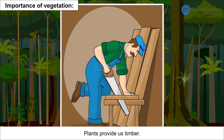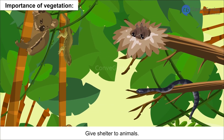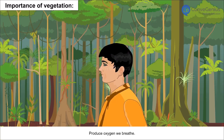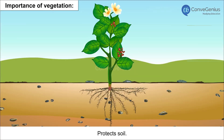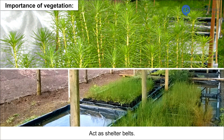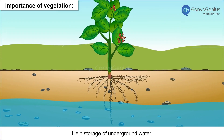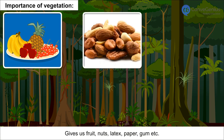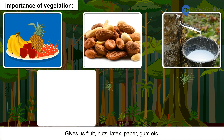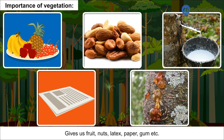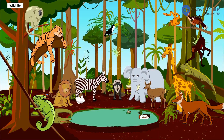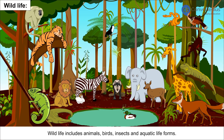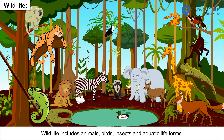Importance of Vegetation: Plants provide us timber, give shelter to animals, produce the oxygen we breathe, protect soil, act as shelter belts, help in storage of underground water, and give us fruits, nuts, latex, paper, gum, etc.